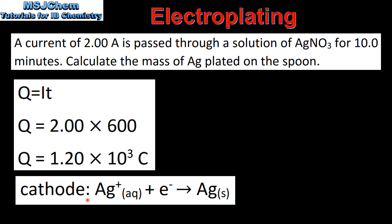Here we have the equation for the reaction at the cathode. The charge on the silver ion is 1 plus, therefore 1 mole of silver ions reacts with 1 mole of electrons to form 1 mole of silver metal.